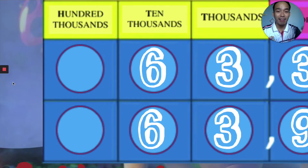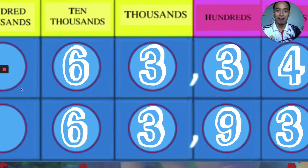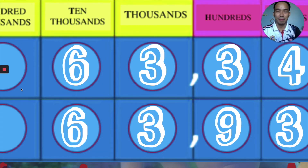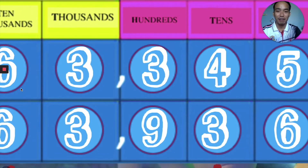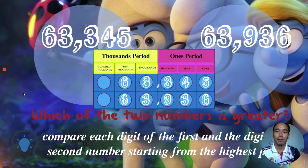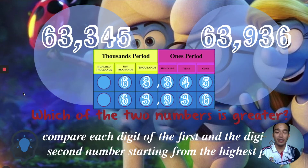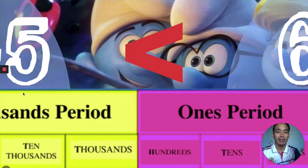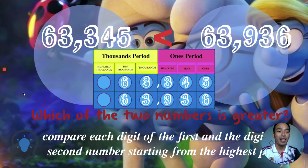Both digits in the ten-thousands place are the same, so let us go to the next place value, which is the thousands place. Looking at the numbers, they are still the same. Let us proceed to the next place value. Looking at the numbers here, nine is greater than three, therefore three is less than nine. The first number is less than the second number. So we say 63,345 is less than 63,936.